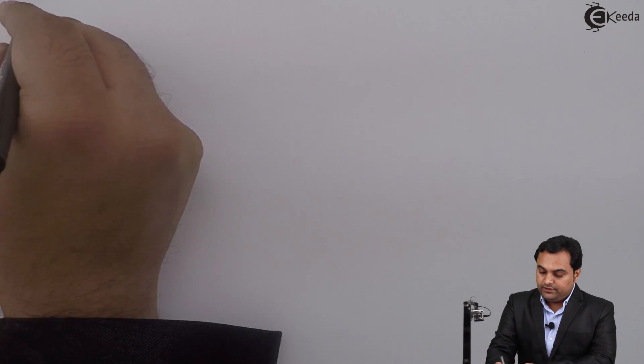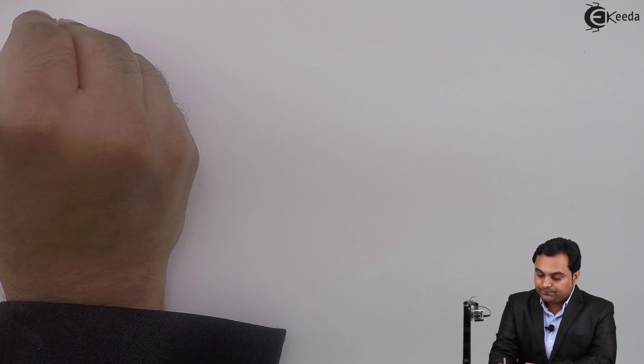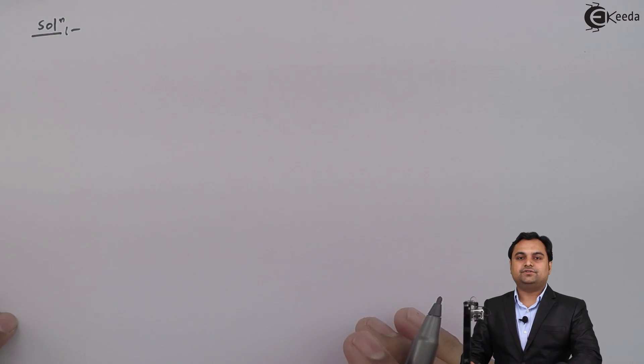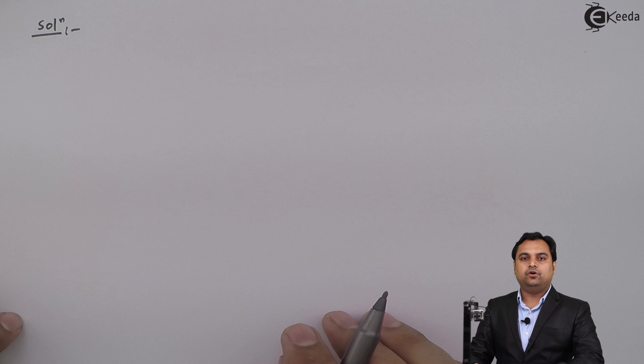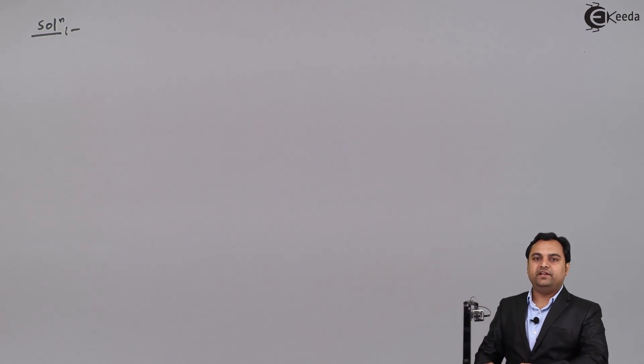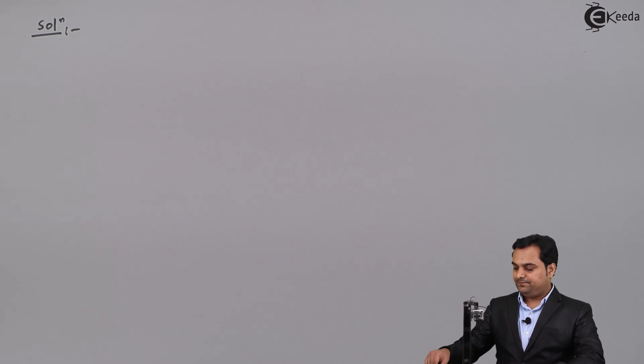Since the problem is based on the Carnot cycle, we first need to draw the Carnot cycle on both the PV diagram and the TS diagram.